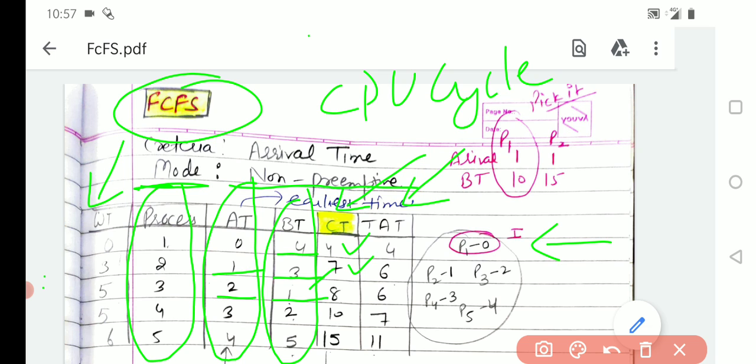Similarly, process 4 arrived at time 3 and it is already into the ready queue. The burst time of this process is 2. So 2 plus 8, the total completion time is 10.